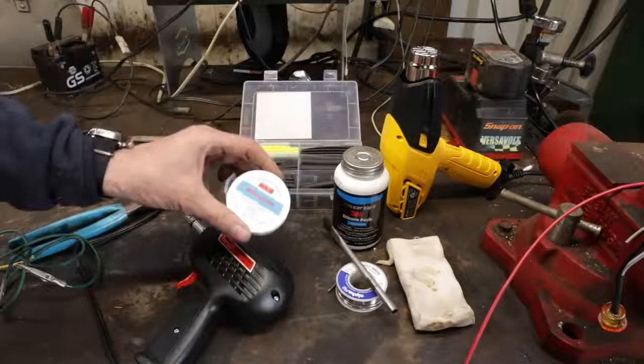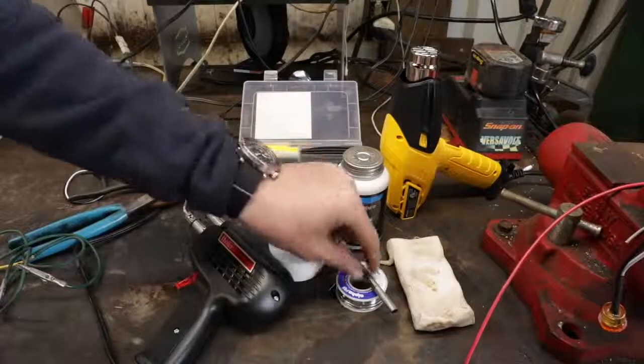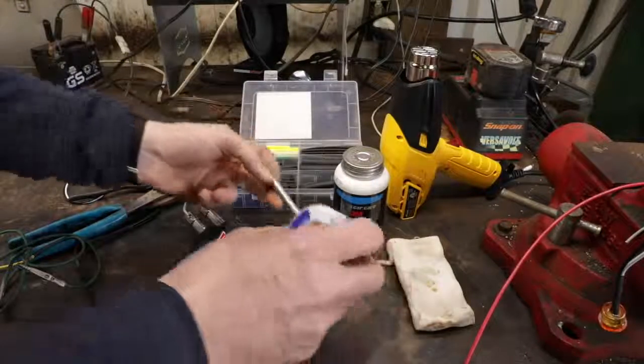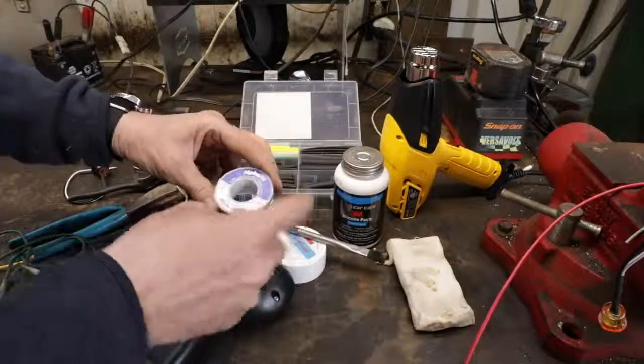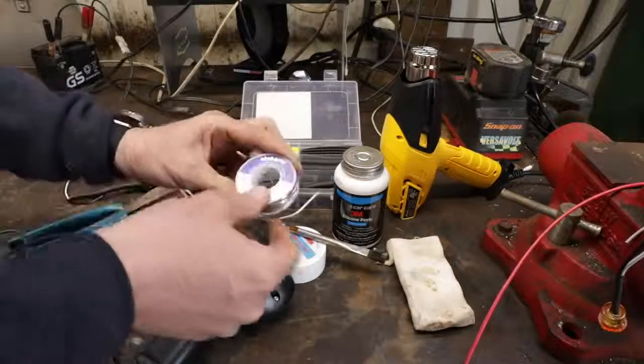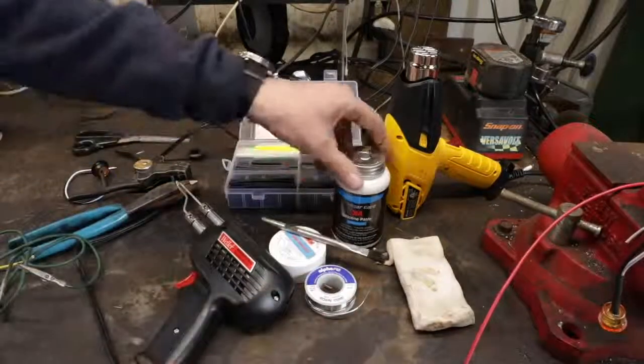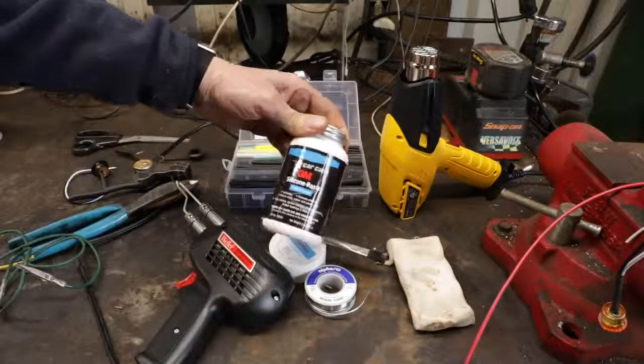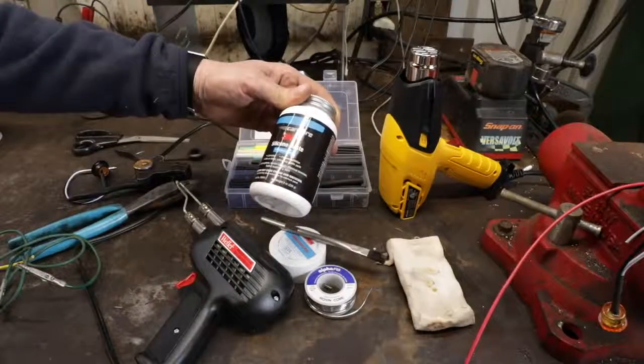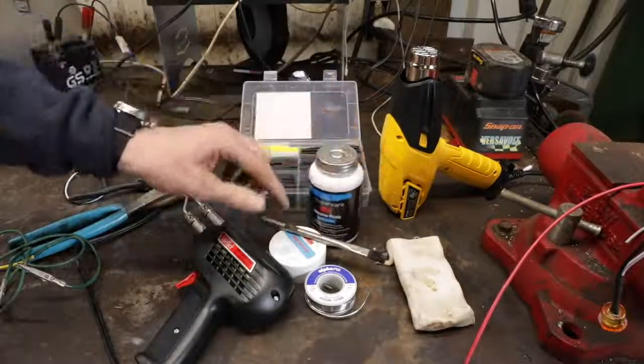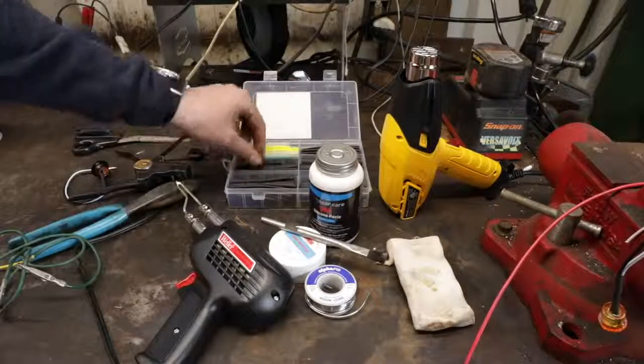You want some rosin paste flux, a little brush, and some rosin core solder. You don't want to use the solder you use for plumbing. It's not the right stuff. And this right here, this stuff's amazing. This is a 3M silicone dielectric grease that we use as well as a good selection of shrink tubing.